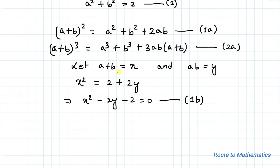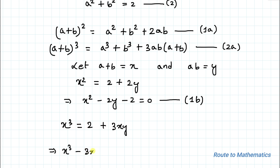Similarly, substituting a + b = x and ab = y into equation 2a, we get x³ = (a³ + b³) + 3xy. From equation 1 we have a³ + b³ = 2, so x³ = 2 + 3xy. Taking all terms to the left-hand side: x³ - 3xy - 2 = 0. Let's call this equation 2b.